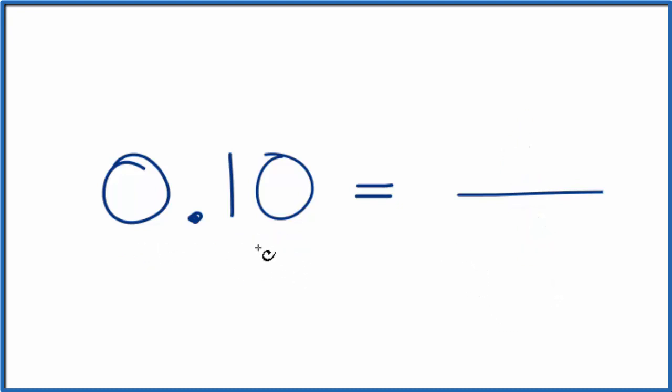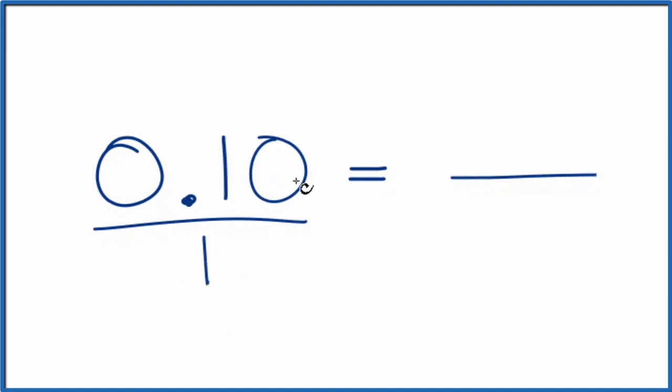So the first thing we could do is we could just write 0.10 over 1. It's still 0.10. We're just dividing by 1, but now it's starting to look a little more in fraction form.